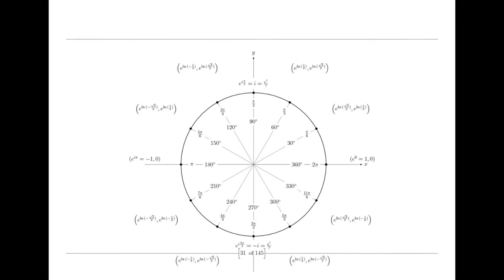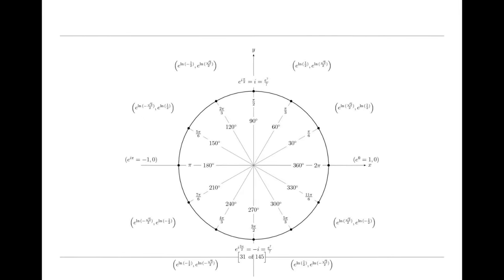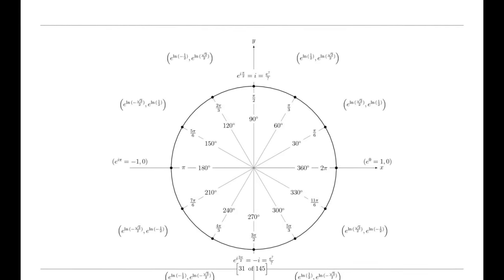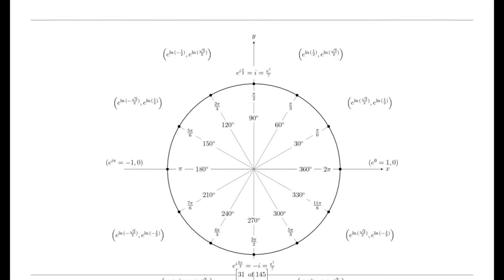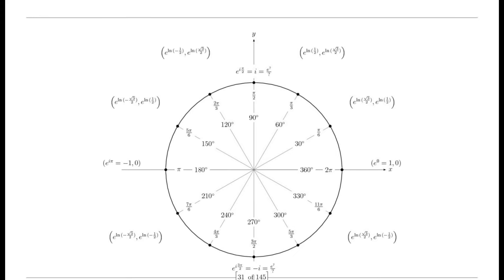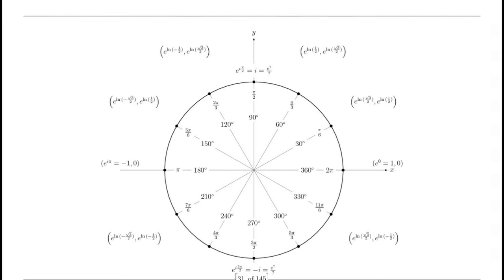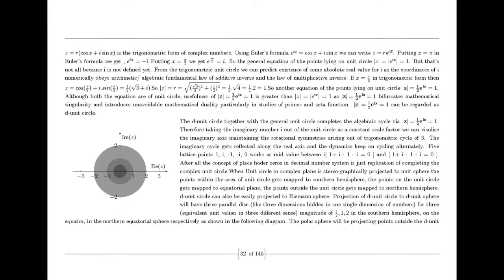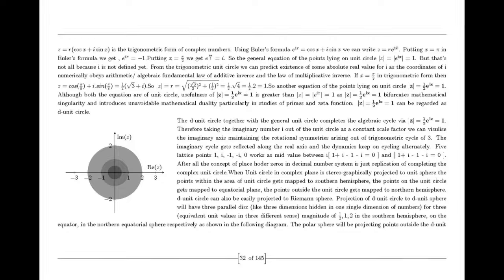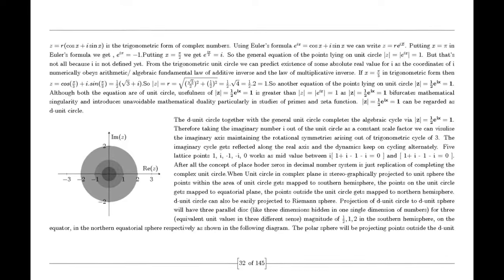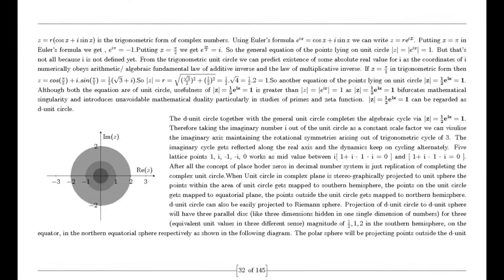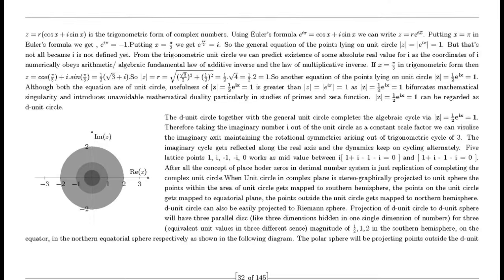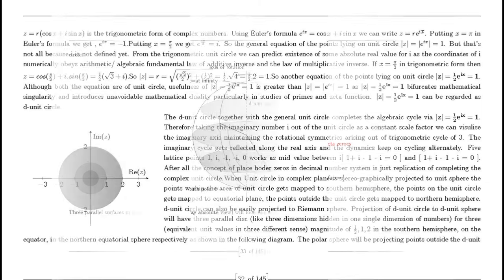By merging these mathematical frameworks, we can push the boundaries of what is possible, enhancing computational efficiency, accuracy, and capabilities. Quantum computing operates on the principles of quantum mechanics, harnessing the unique properties of quantum bits — qubits — that can exist in multiple states simultaneously. This characteristic, known as superposition, along with entanglement, allows quantum computers to perform complex calculations at speeds unattainable by classical computers. Traditionally, quantum states are represented using complex numbers. By integrating these complex numbers into the decimal system, we can develop a more unified and intuitive framework for representing quantum states, simplifying the mathematical models used in quantum algorithms.